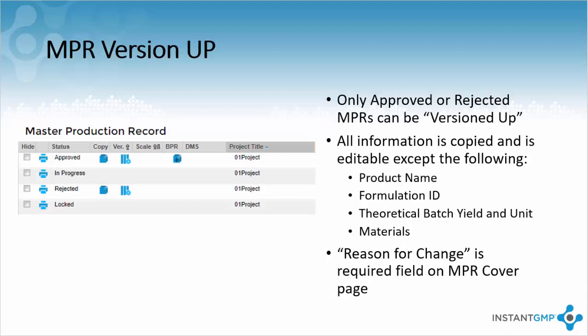Versioning up is meant to allow for the addition of new documentation, equipment, a bill of materials, or manufacturing steps without changing the product being produced. This is meant to make the same material but changing factors that are used to make the original project from the NPR, but it asks for a reason for change. This is for auditing purposes.